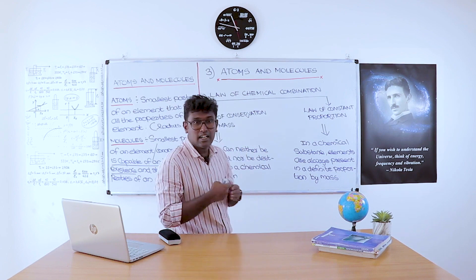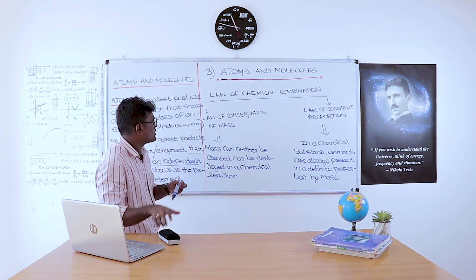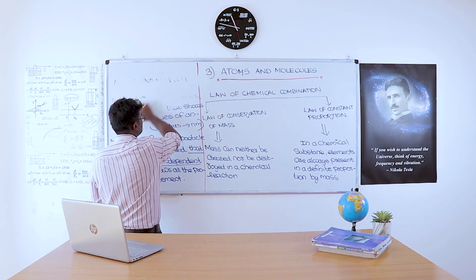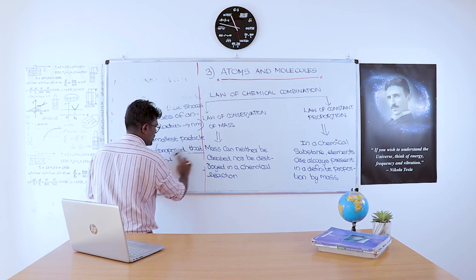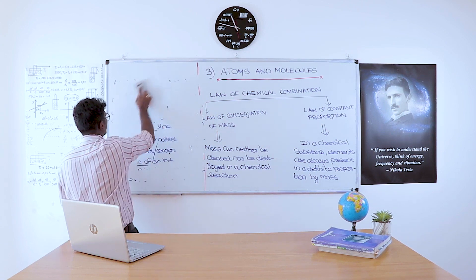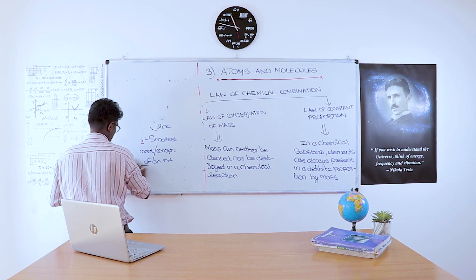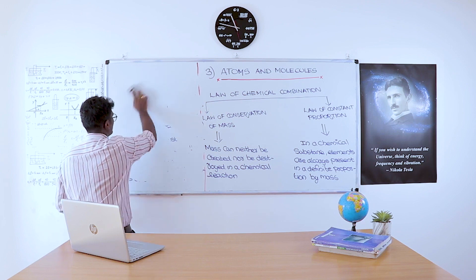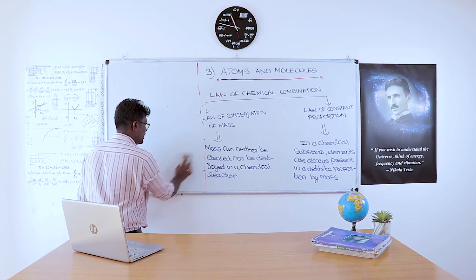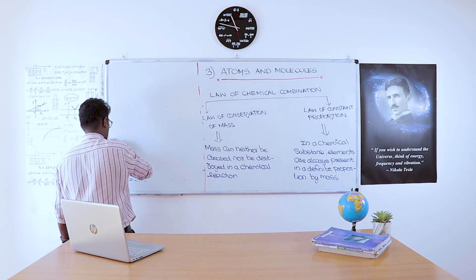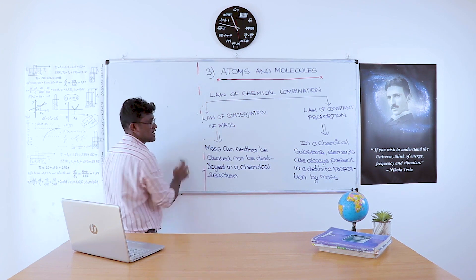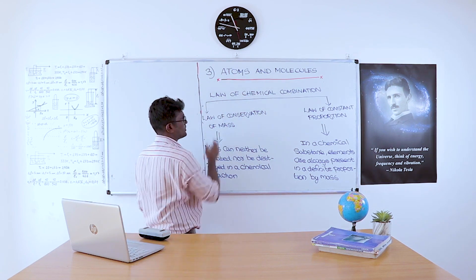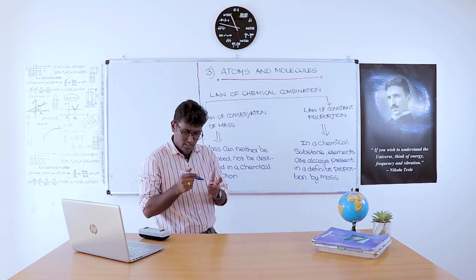Related to atoms and molecules, the introductory part of this chapter includes a law called the Law of Chemical Combination. The Law of Chemical Combination consists of two subsidiary laws: the Law of Conservation of Mass and the Law of Constant Proportion.